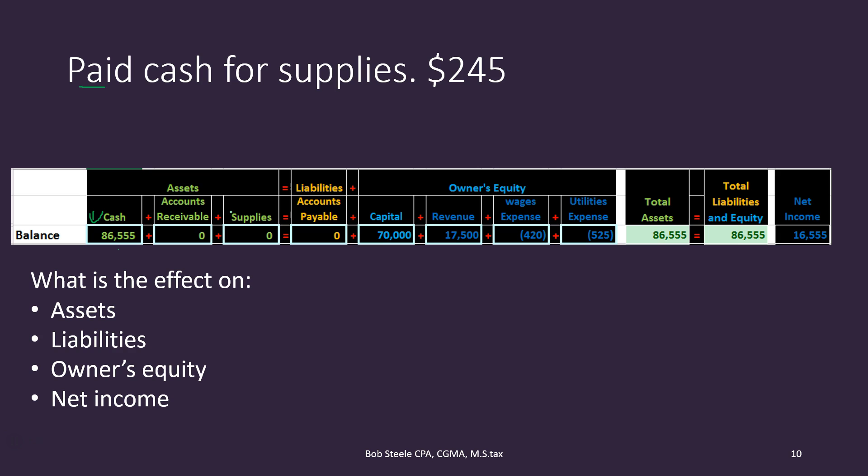We'll take inventory of the supplies and expense them as we use them. So it's going to be supplies. You might get confused about whether supplies is going up or down — but since cash went down and supplies is on the same side of the equation, both being assets, supplies must be going up.